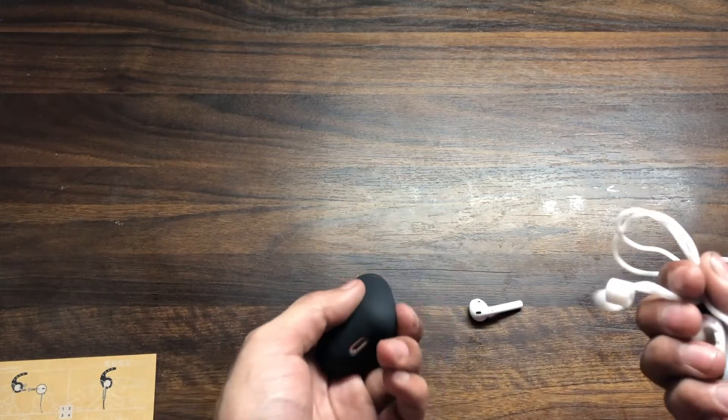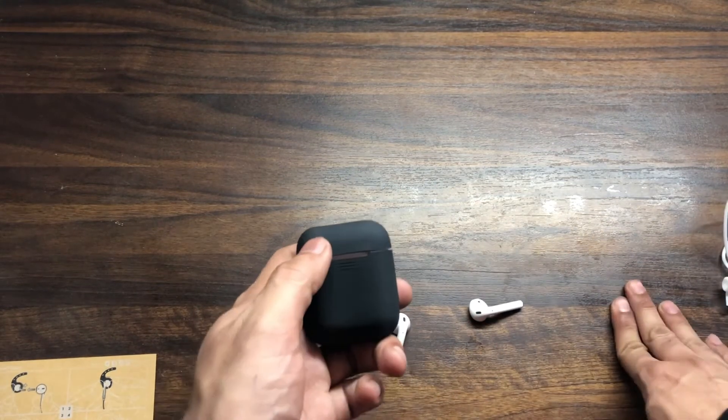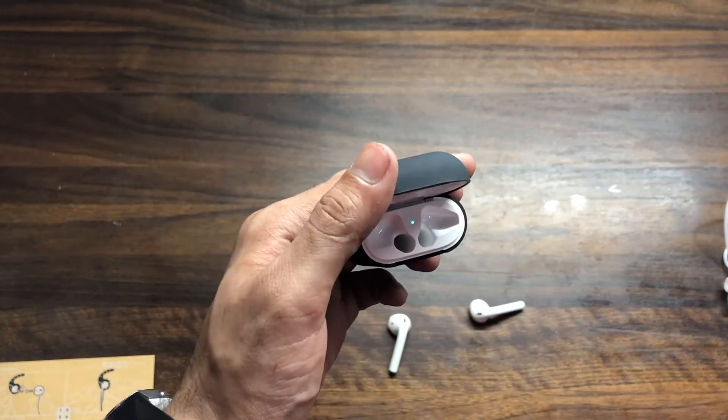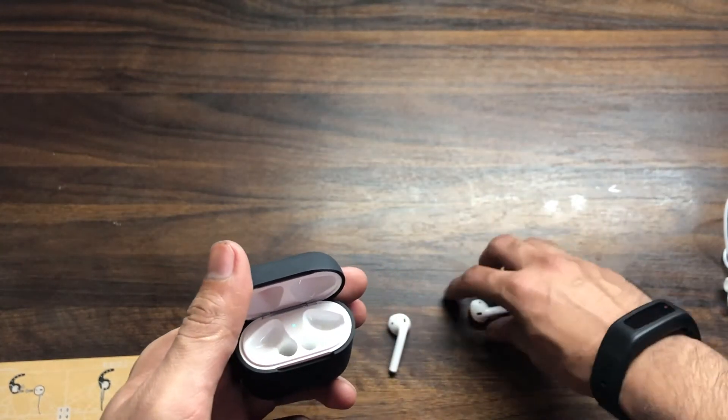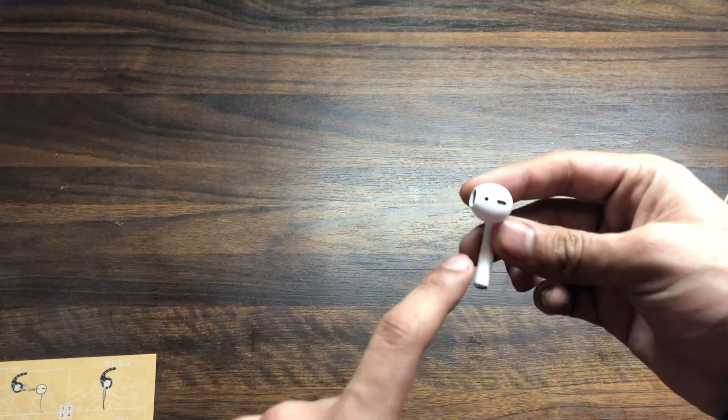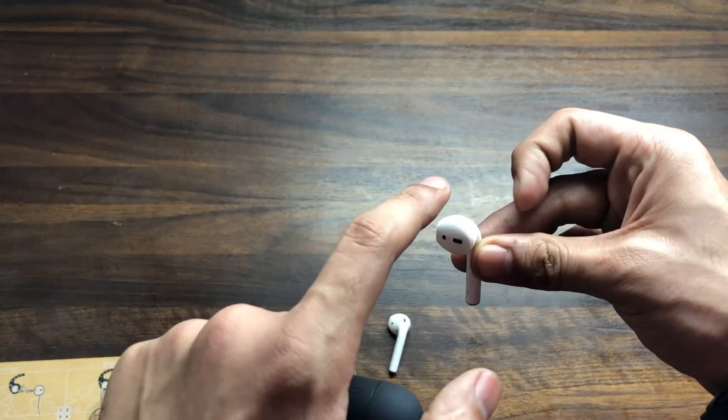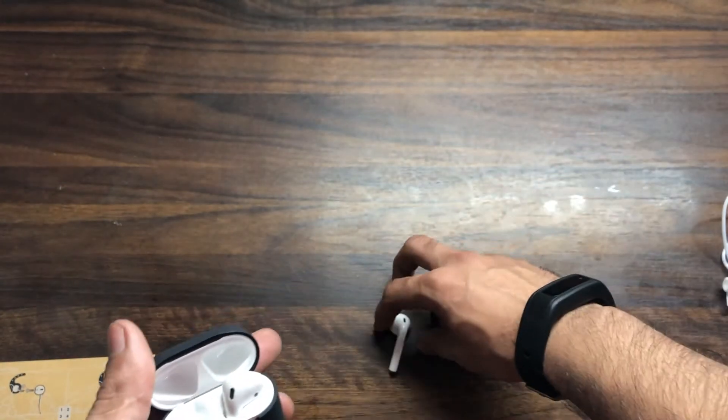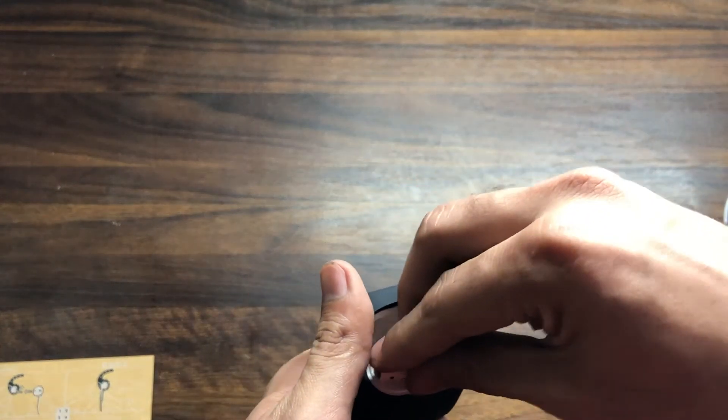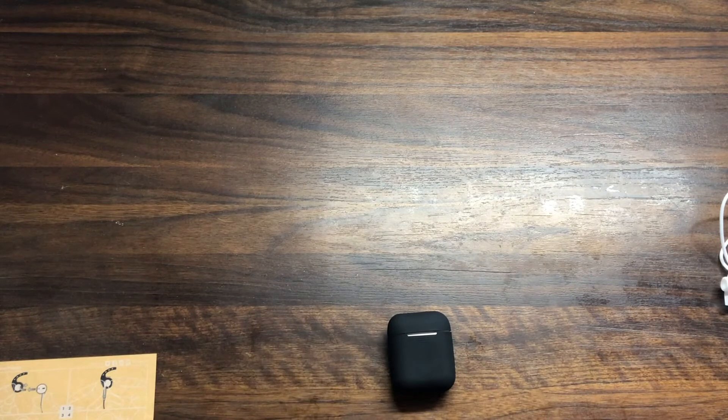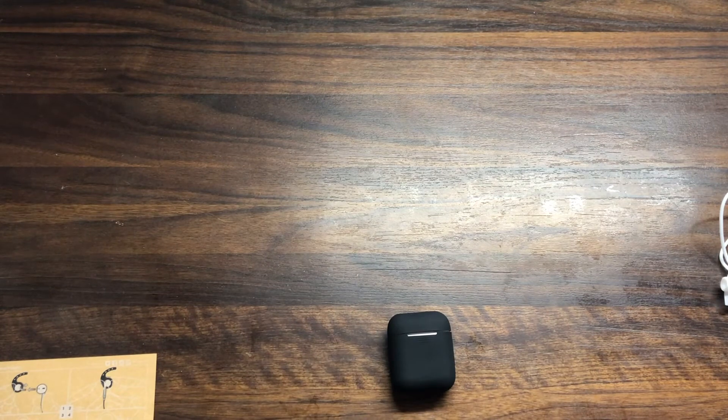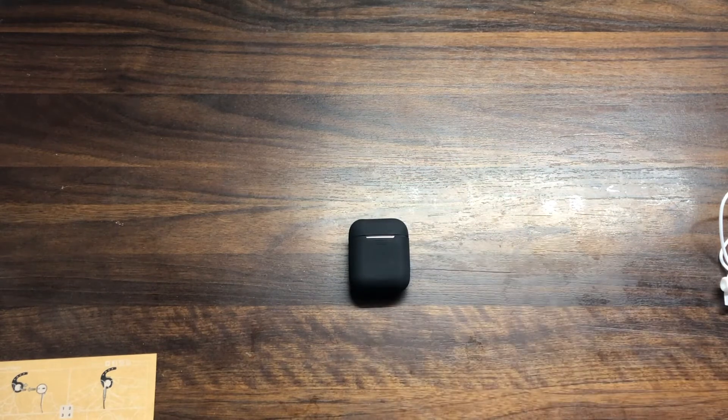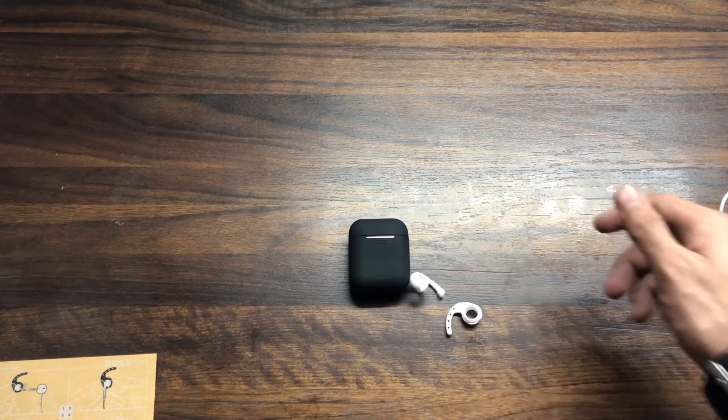But the main problem with the ear hooks and the silicon strap is that if you put them on the AirPods, how do you charge it? Because you have a strap here and it doesn't fit in the case. So one solution is that when you want to charge, you have to remove them and then put them in to charge.